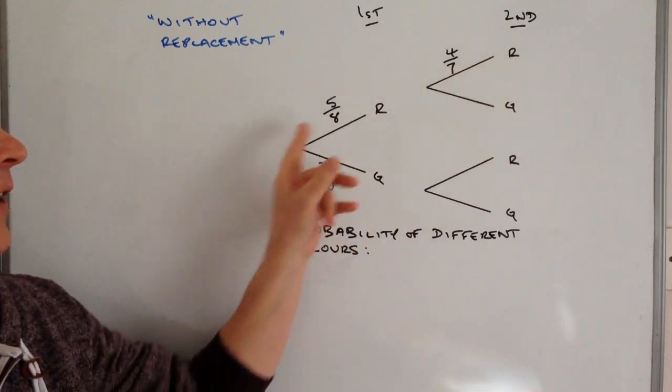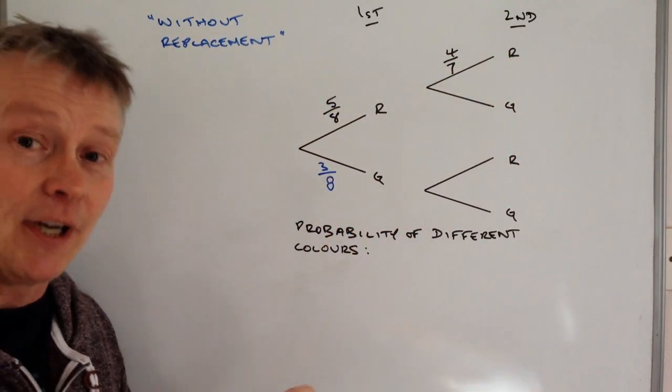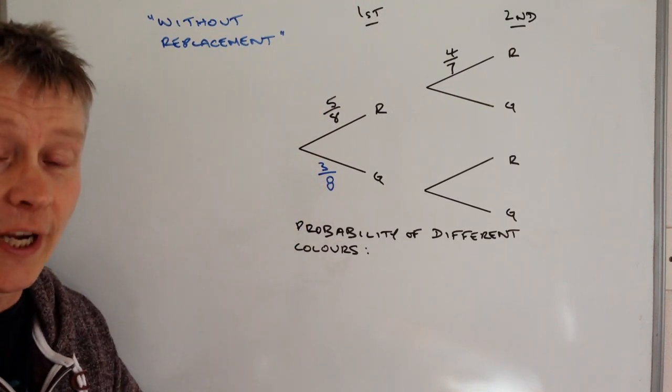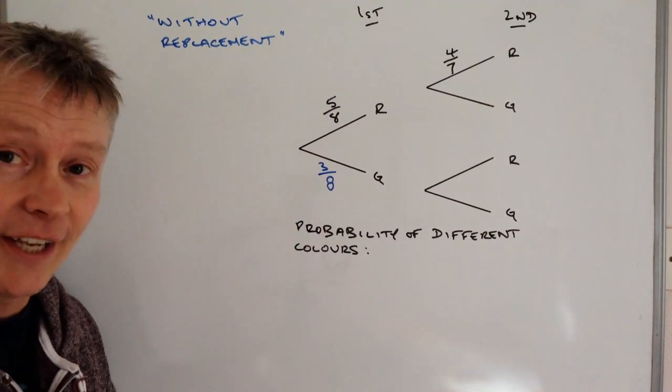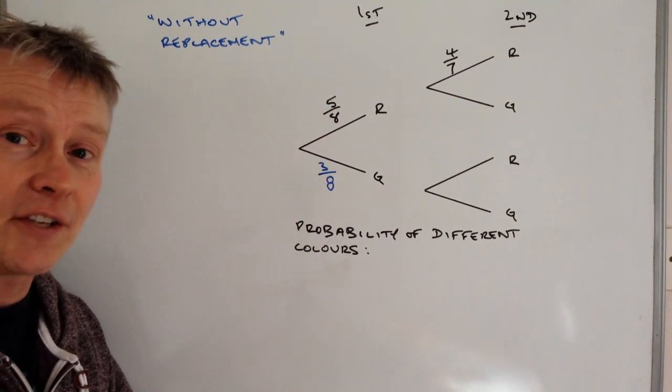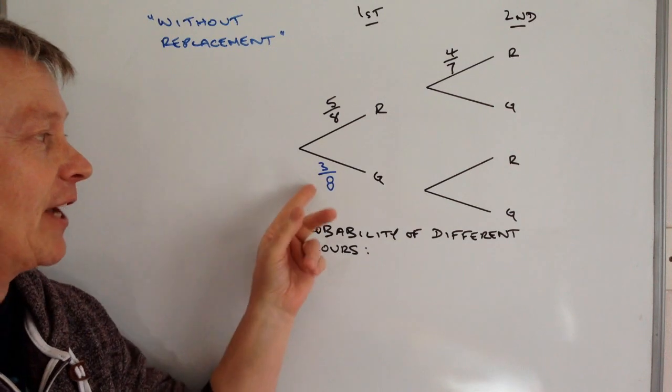So just ignore everything else at the moment let's have a look at that. We've got eight marbles in the bag, five of which are red, three of which are green, and the guy's going to put his hand in at random and he's going to pull out a marble. Well there's a five out of eight chance he's going to get a red one and a three out of eight chance he's going to get a green one, but he's taken a marble away.